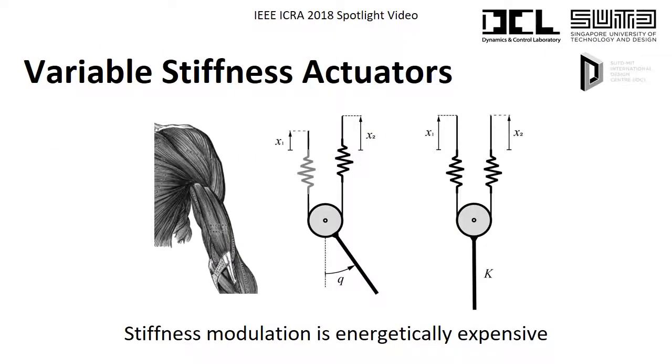The simplest model of a biologically inspired variable stiffness actuator has two nonlinear springs and a rotary joint. Extending one of the springs can rotate the joint. Extending both springs makes the joint stiffer.